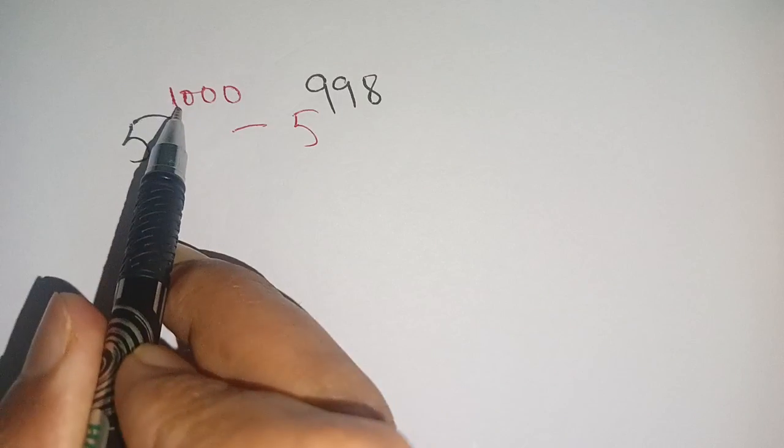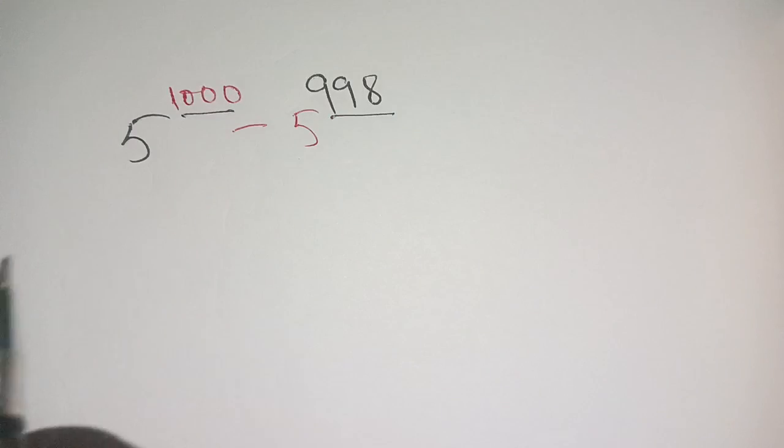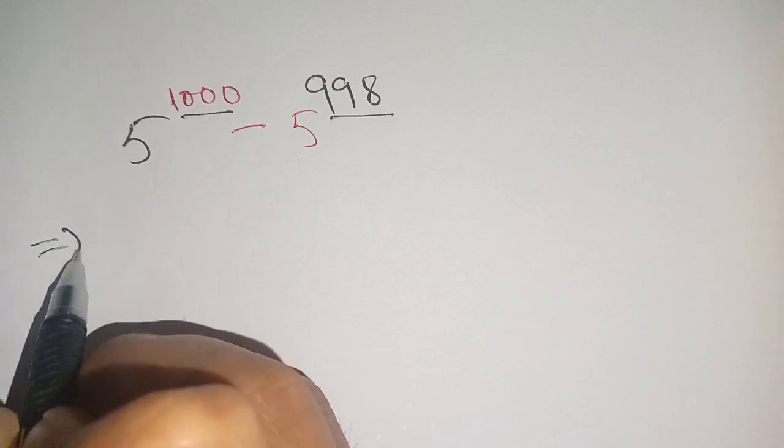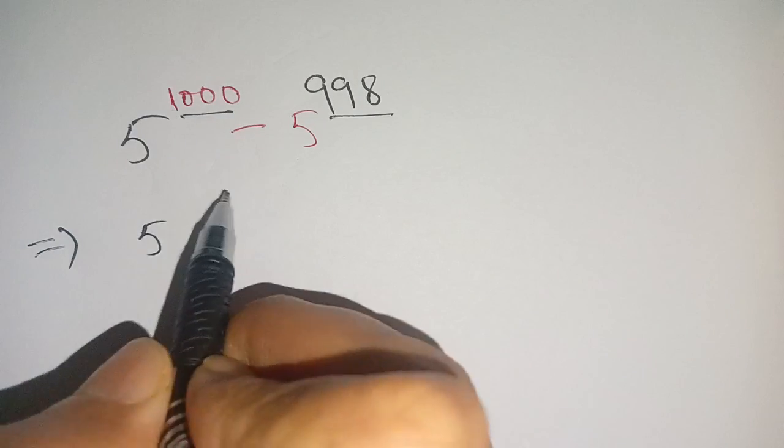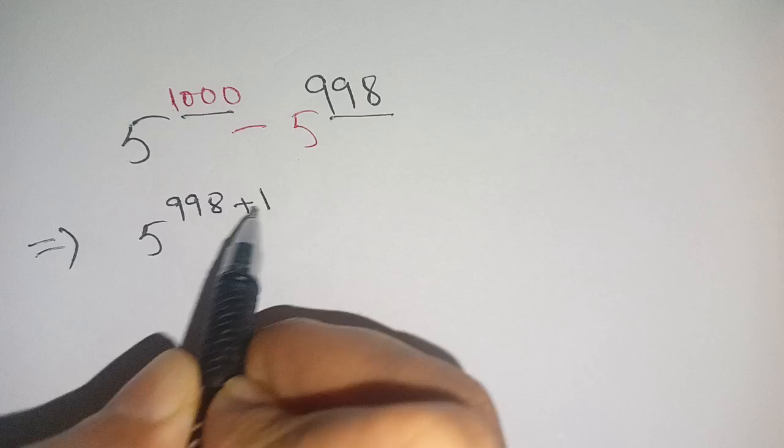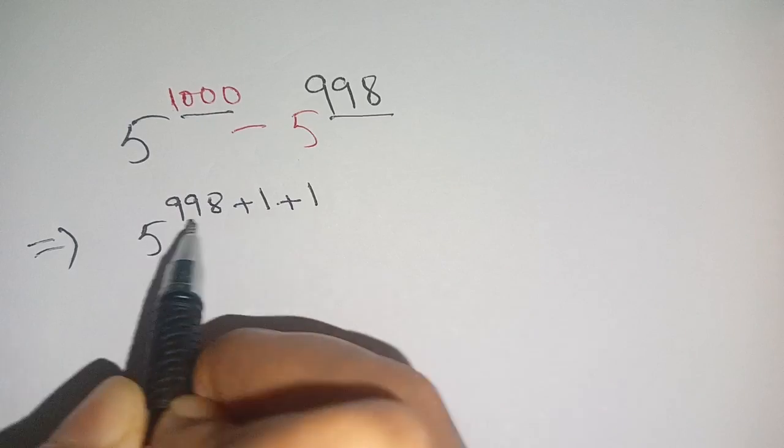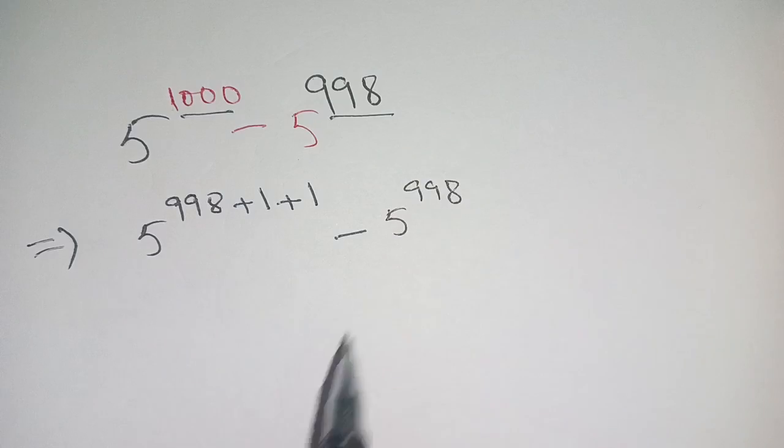Hello everyone, how to solve 5 power 1000 minus 5 power 998? Let us solve this. We can write 5 power 1000 as 998 plus 1, 999 plus 1, or 1000 minus 5 power 998.